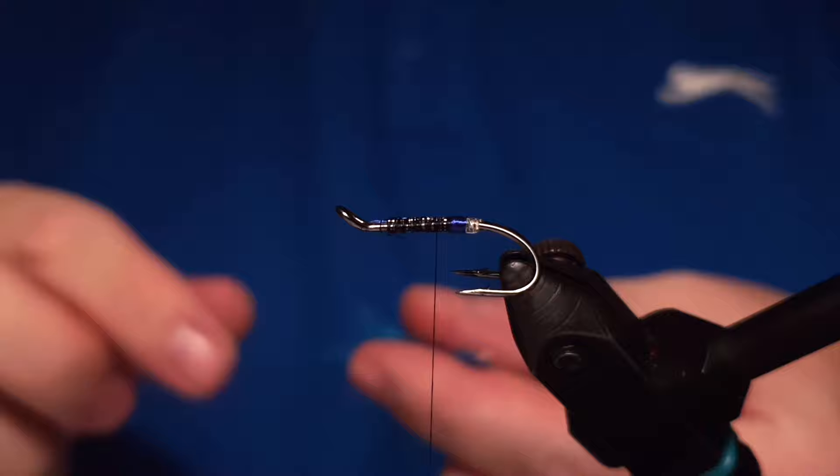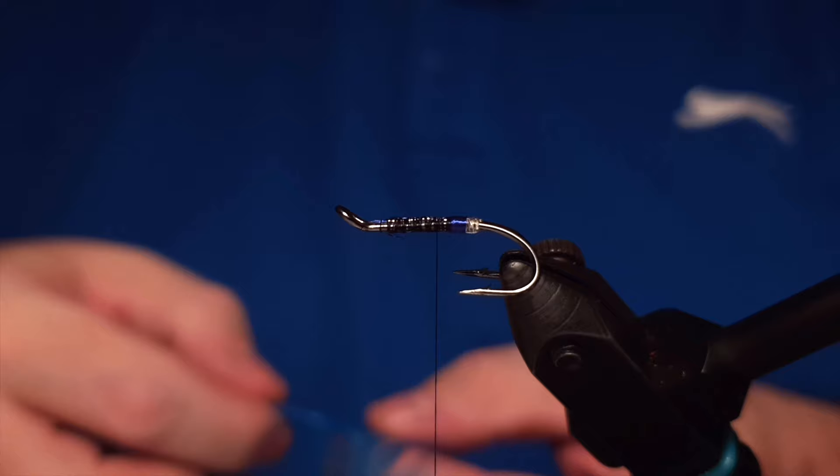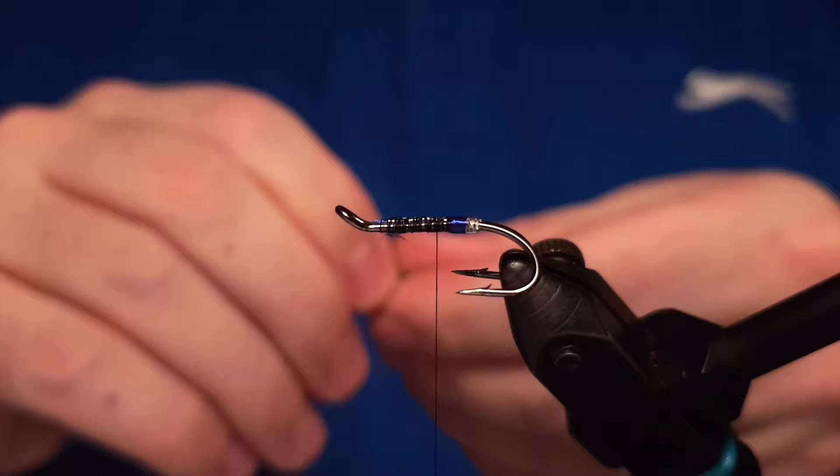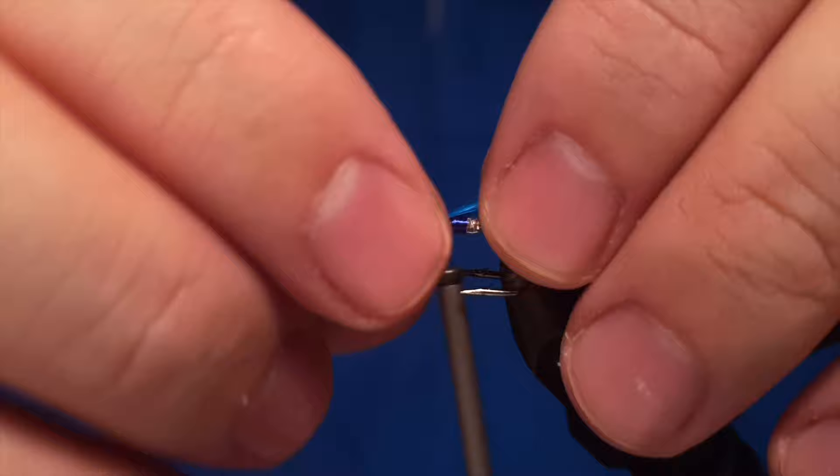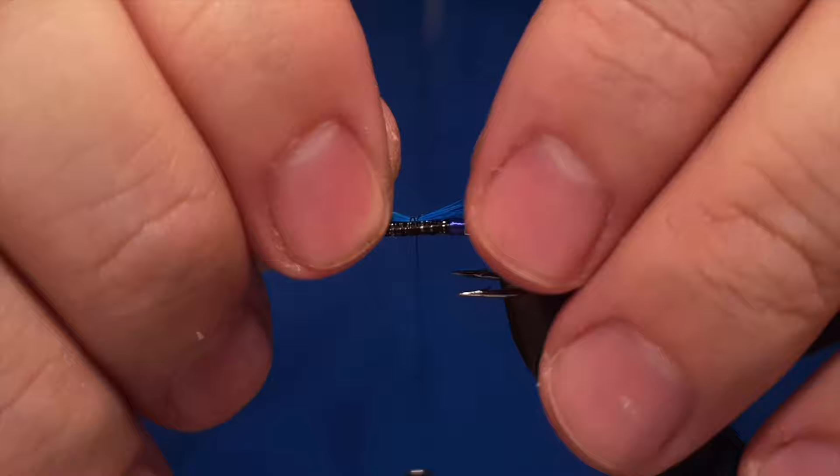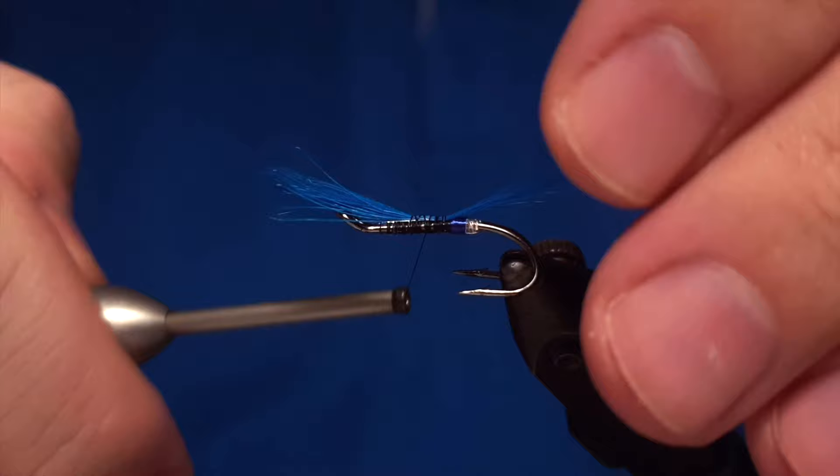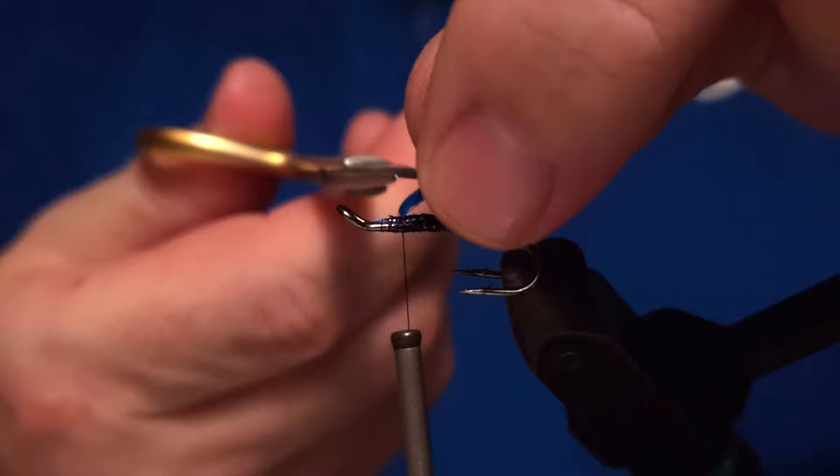For a tail for the fly, we are using a blue rooster. You can use a blue saddle or just making sure it's blue, not necessarily too light colored. Something like a normal blue colored feather. We adjust that down to the shank. I felt it's a little bit too long, so we can drag it in position and then lock it down with our thread. Then we have the tail of the fly ready.